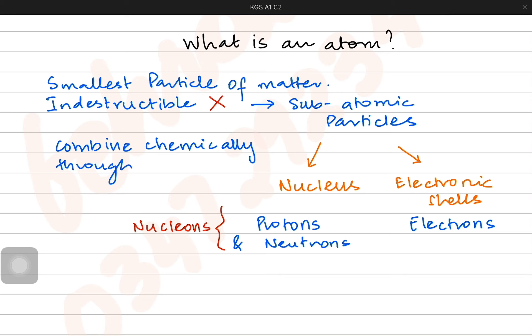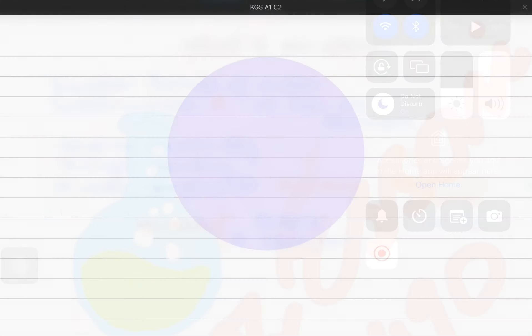Atoms combine chemically through bonding with other atoms to make molecules and various different kinds of compounds. These atoms can combine with similar atoms or with other atoms of different kinds.